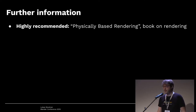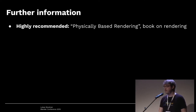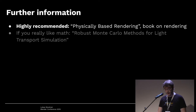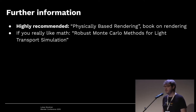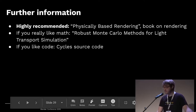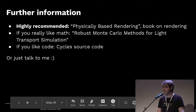One book I would highly recommend to everybody is Physically Based Rendering — that's the book where I learned everything, and you can read it online for free legally. If you really like math and want all the details, Robust Monte Carlo Methods for Light Transport Simulation is a PhD thesis by Eric Veach — the guy who invented multiple importance sampling and bidirectional path tracing. If you like code, just look at the Cycles source code — it's open source.